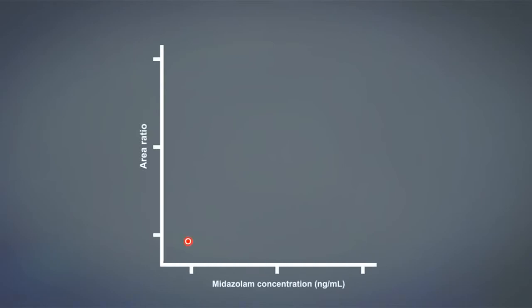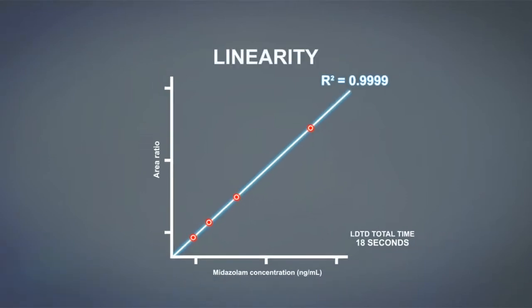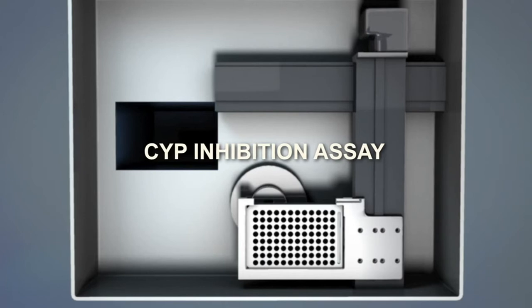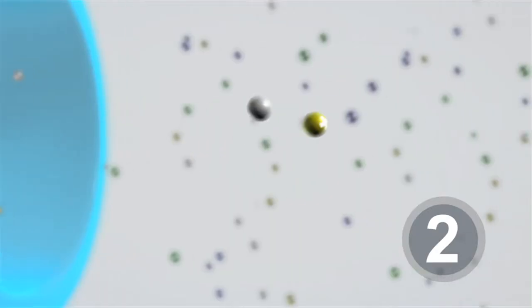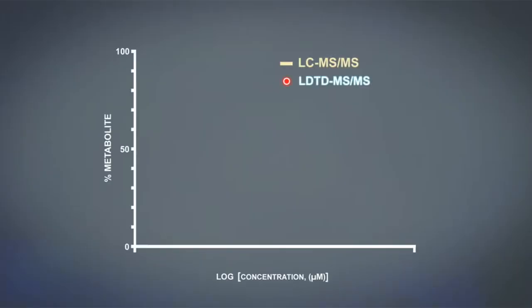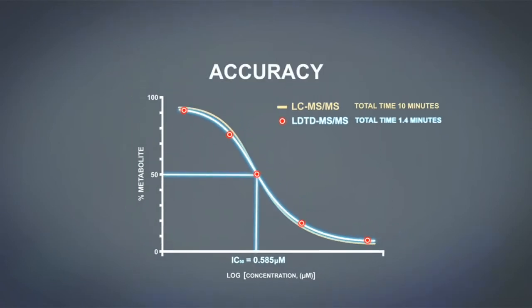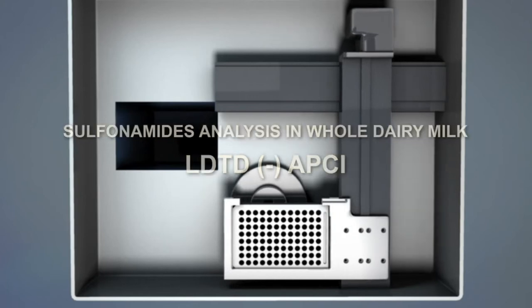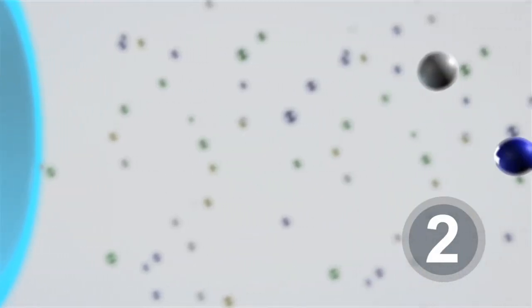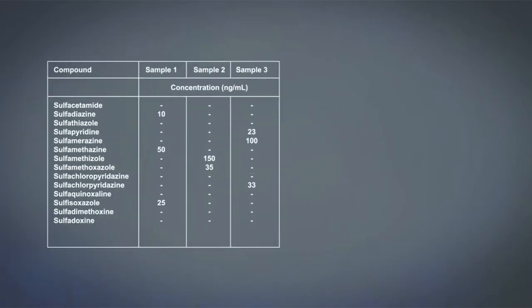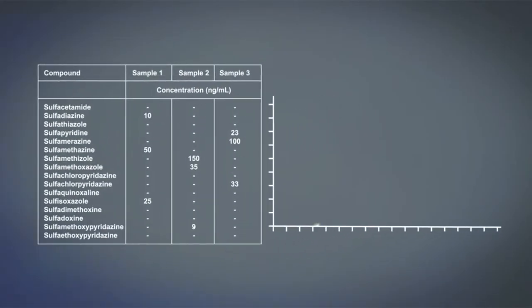The analytical speed provided with the LDTD allows any laboratory an ultrafast quantitation ability. The LDTD allows you to increase your laboratory's throughput with accurate results. Fast screening combined with accurate quantitation is achieved with the LDTD on a complex matrix.